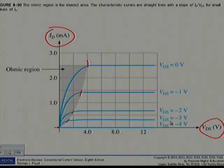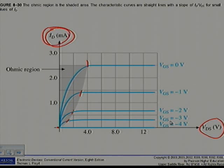The characteristic curves in this region have relatively constant slope for small values of ID. The slope of the characteristic curve in the ohmic region is the DC drain-to-source conductance of the JFET, so GDS equals ID divided by VDS. Recall that resistance is the reciprocal of conductance, so the DC drain-to-source resistance RDS equals 1 over GDS, which equals VDS over ID.